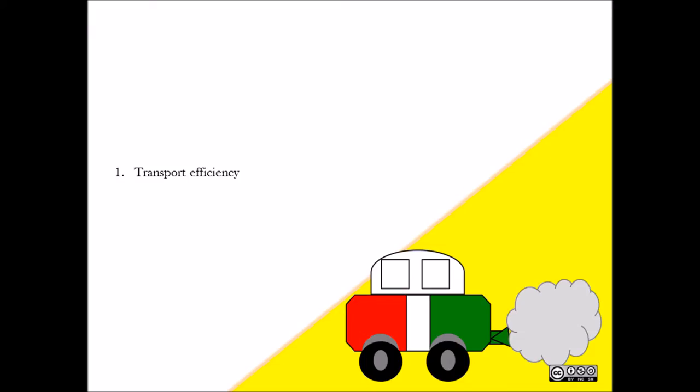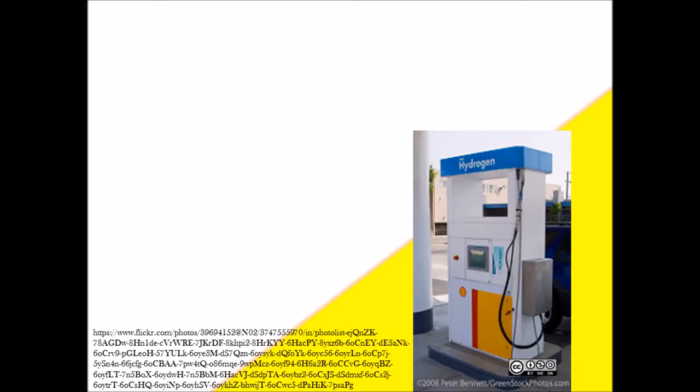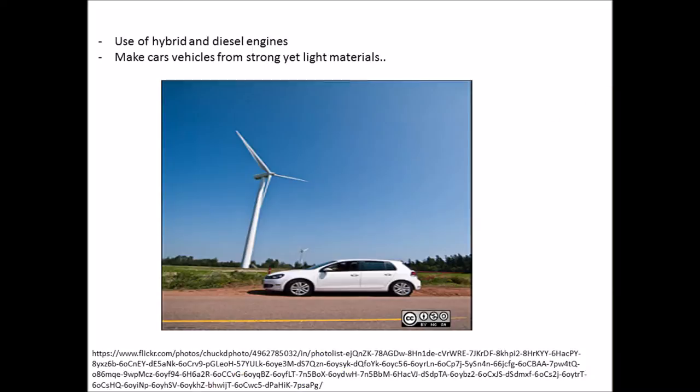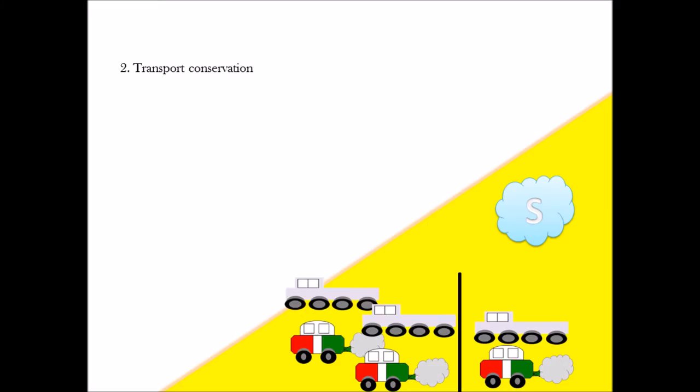Transport efficiency as a wedge would be to concentrate on achieving fuel efficiency as the transport sector in Hungary accounted for 68% of total use of petroleum in 2009. This would be achieved through using hybrid and diesel engine and making car vehicles from strong yet light materials. Transport conservation as a transport sector, as mentioned before, causes the most emissions of CO2.